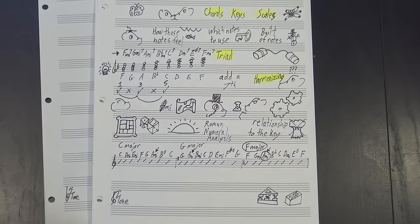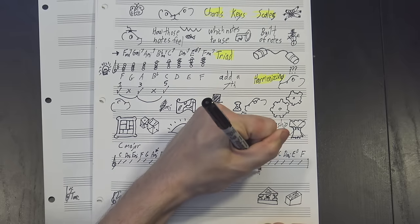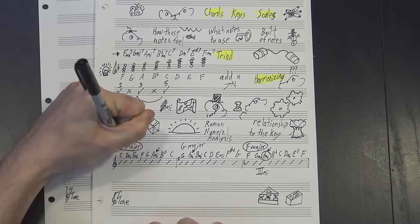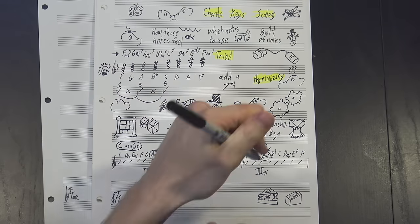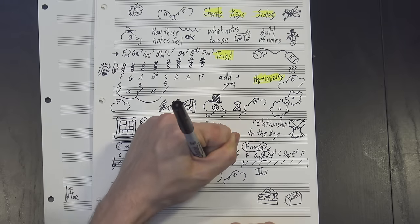For instance, in F major, the A minor chord is built on the third note of the scale, so we'd write it as III minor. On the other hand, in C major, it's built on the sixth note, so we'd call it VI minor, even though it's the same underlying chord.